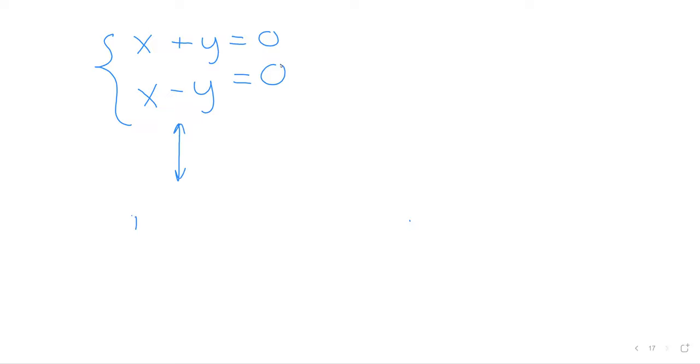That's the same as having x times the vector (1,1) plus y times the vector (1,-1) equals the zero vector.